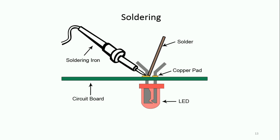In your first or second year electrical electronics laboratory, you may have experience making circuits. For soldering, we need three important components: one is the soldering iron, the second is solder, and the third is the component — and fourth is the circuit board. The component may be a lead as shown in the figure, or a transistor, resistor, capacitor, or IC chips.